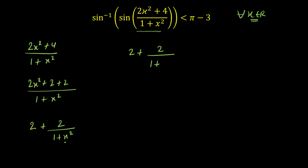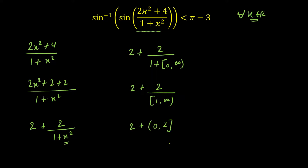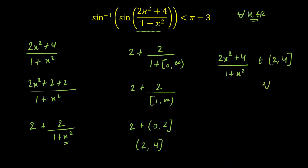A perfect square always varies from 0 to infinity (0 included). So x² ∈ [0, ∞), meaning 1 + x² ∈ [1, ∞). Dividing 2 by [1, ∞) gives (0, 2] (open at 0, closed at 2). Adding 2 gives the expression ranging from (2, 4], where 2 is open and 4 is closed. So the value of (2x² + 4)/(1 + x²) always lies in (2, 4] for all x ∈ R.